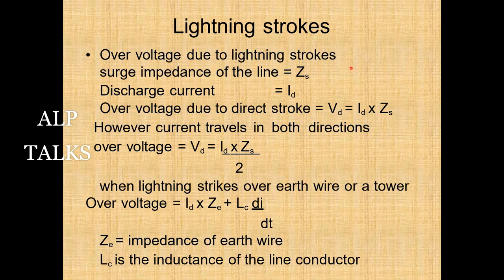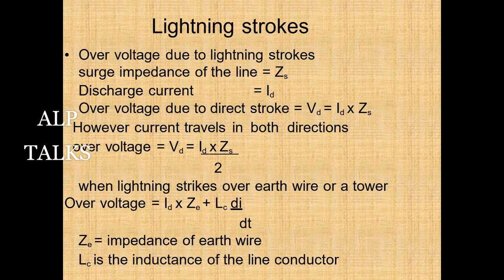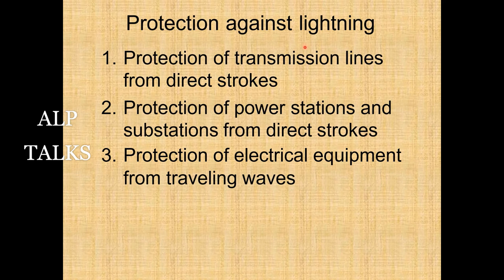Static-induced charges also accumulate on overhead conductors when a charged cloud passes above. When the cloud is swept away, the charge is released and travels in both directions as two traveling waves; the earth wire does not prevent such surges. For overvoltage due to lightning stroke: surge impedance of line is Zs, discharge current is Ig, and overvoltage is Ig × Zs (taking half for each direction). When lightning strikes at a tower, the overvoltage includes L·di/dt, where Zg is the impedance of the earth wire and Lc is the inductance of the line conductor.